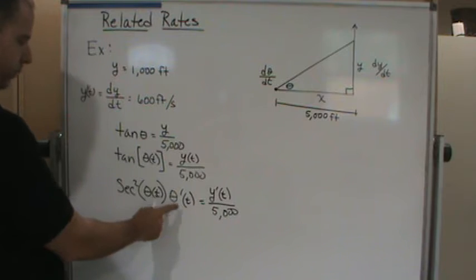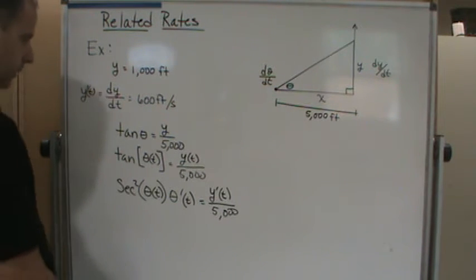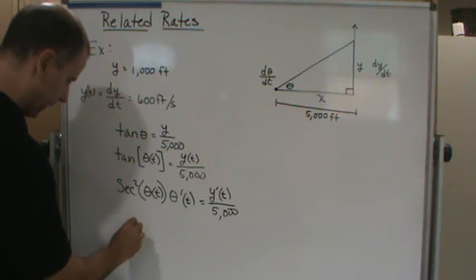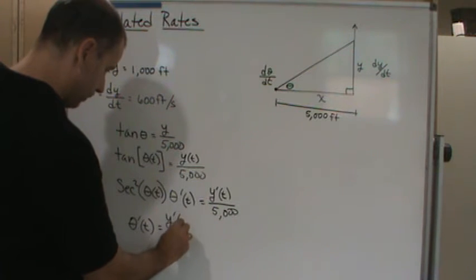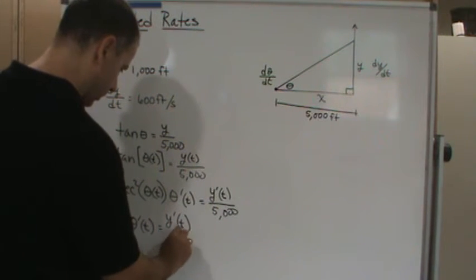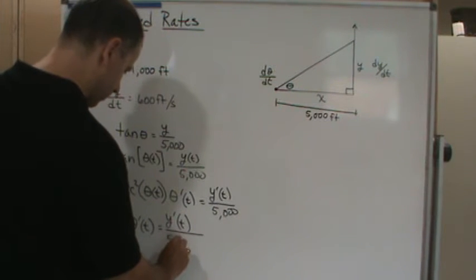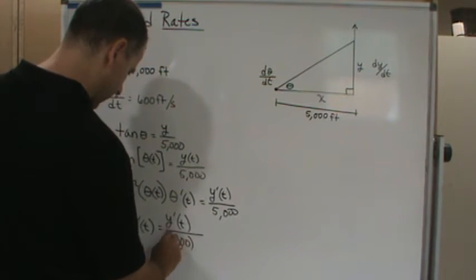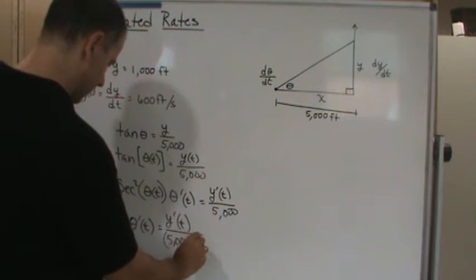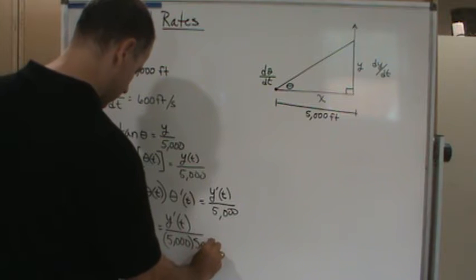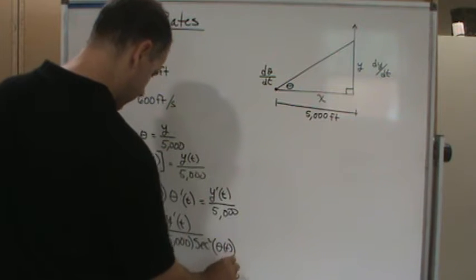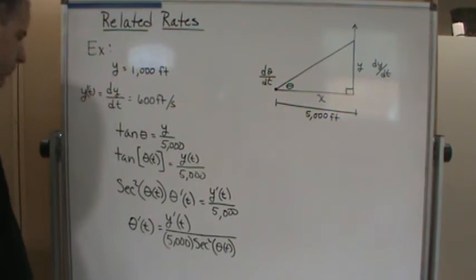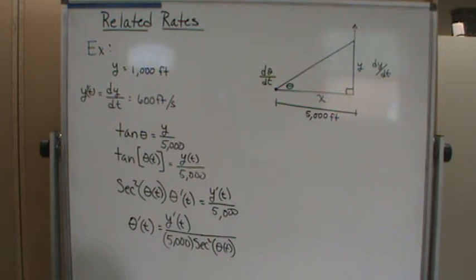Now we divide both sides by secant²(θ(t)), since that's what we're solving for — the change in angle. So θ-prime of t equals y-prime of t divided by 5,000, all divided by secant²(θ(t)). Now we need to plug in values, but first we have to find θ and secant²(θ) at the given moment.